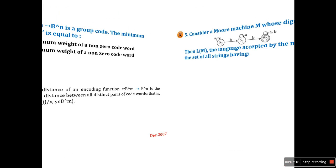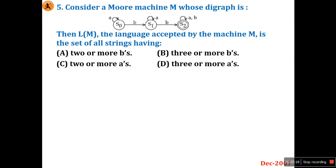Question 5: Consider a Moore machine M whose diagram has initial state S0, states S1 and S2, and input symbols a and b. The language L(M) accepted by machine M is: set of all strings having two or more b's, three or more b's, two or more a's, or three or more a's?